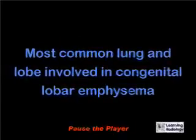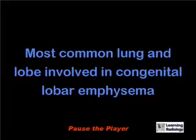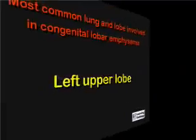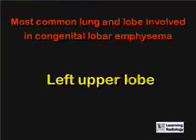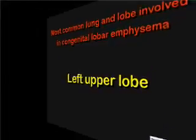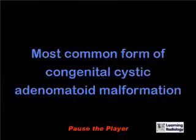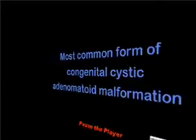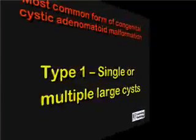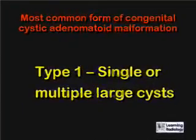What is the most common lung and lobe involved in congenital lobar emphysema? The left upper lobe. What is the most common form of congenital cystic adenomatoid malformation? Type 1, with single or multiple large cysts.